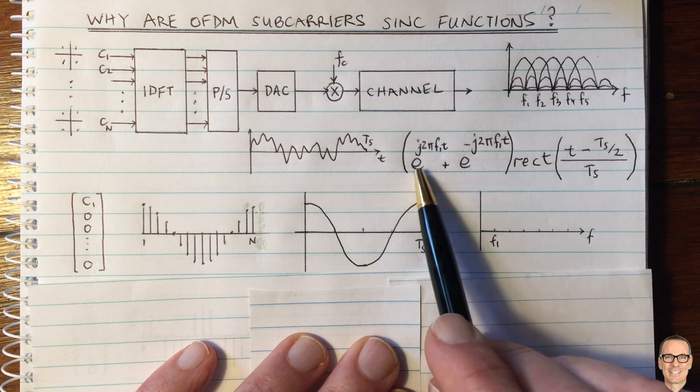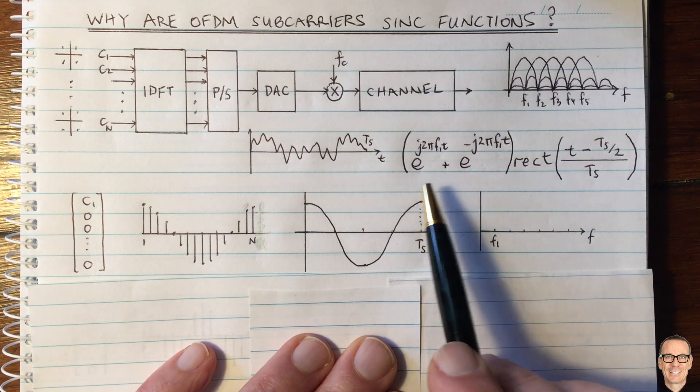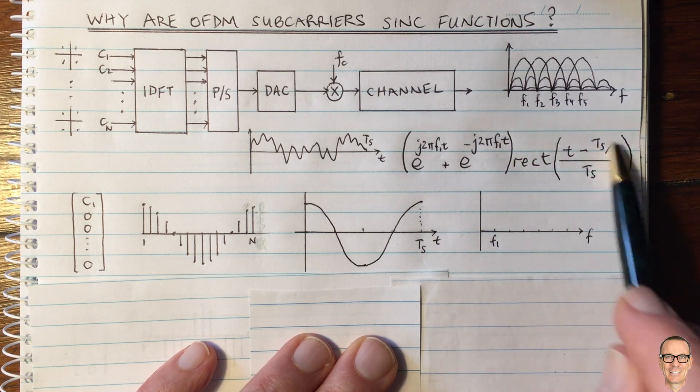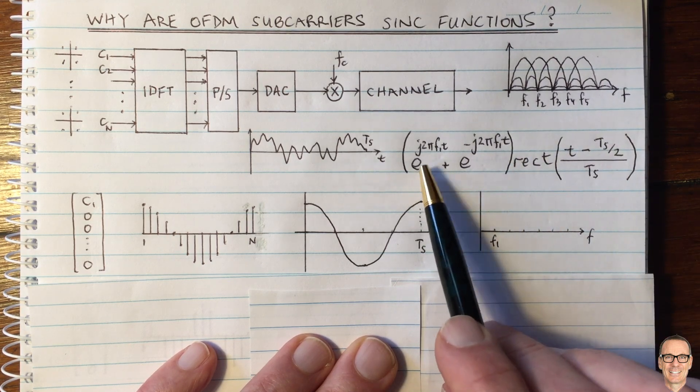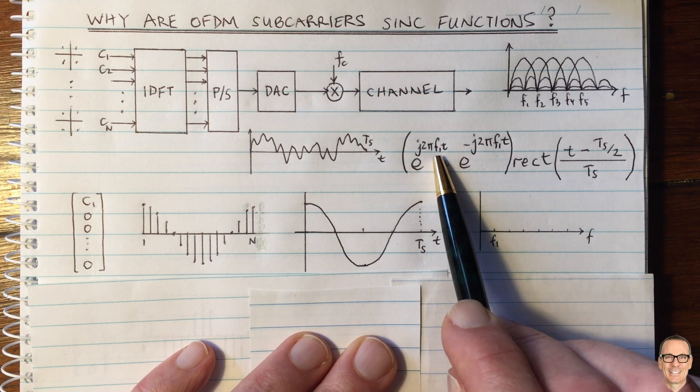The Fourier transform of this complex exponential is a delta function, so when we convolve the delta function with the sinc function, we're going to get the sinc function located at the location of the delta function. In this case, that will be located at F1.